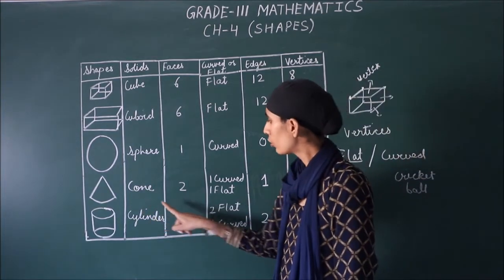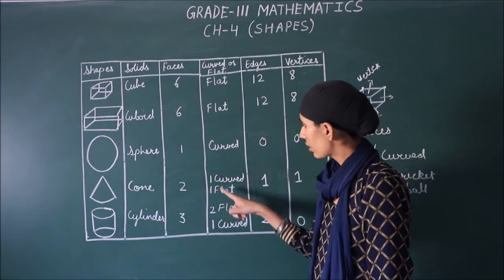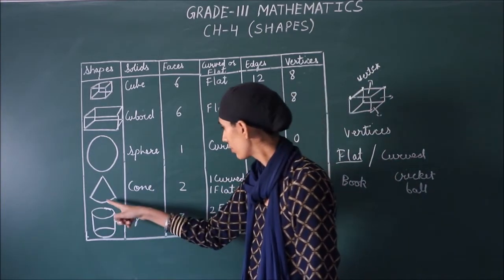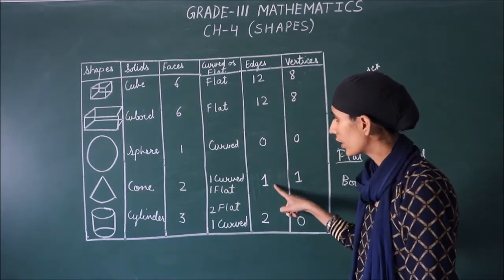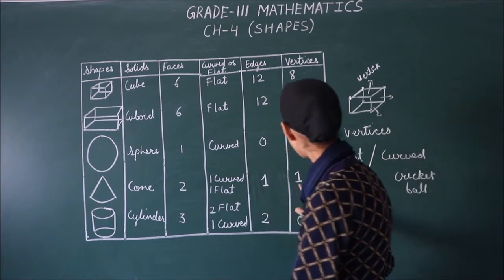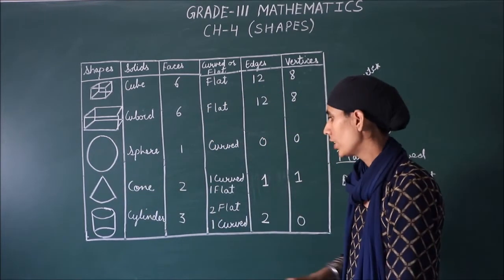Next, which one is cone? In the cone, we have two faces. Next, one is curved. And one is flat. Next, edge. We have one. And vertices also have one. We have one vertices.